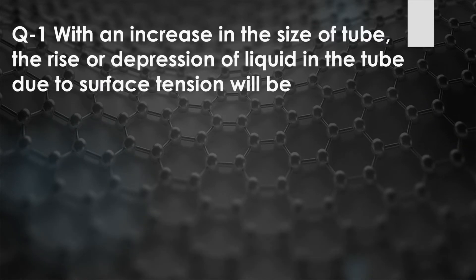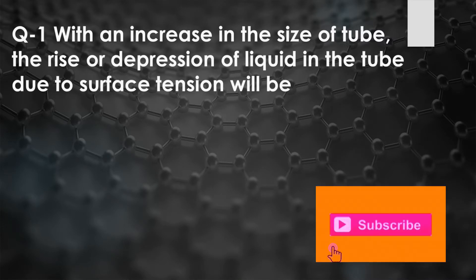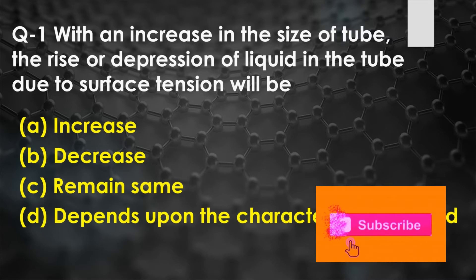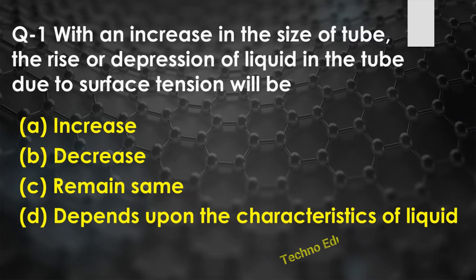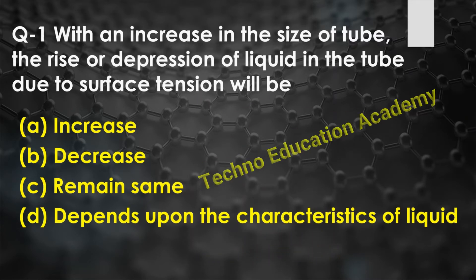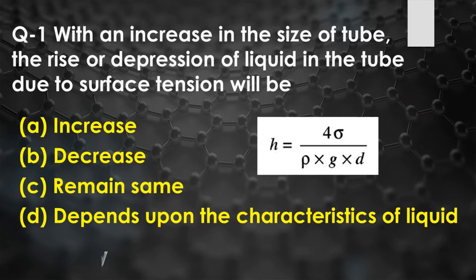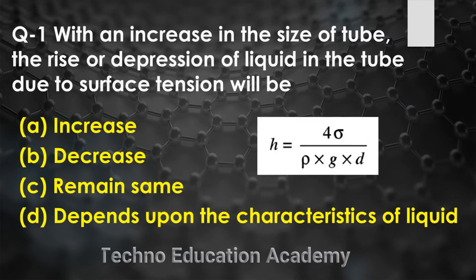Question number one: With an increase in the size of tube, the rise or depression of liquid in the tube due to surface tension will be — option A: increase, option B: decrease, option C: remain same, option D: depends upon the characteristic of liquid.